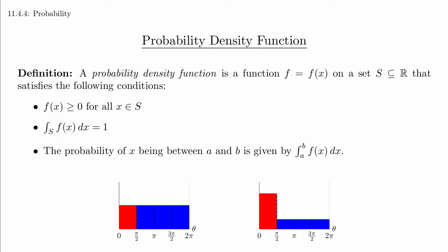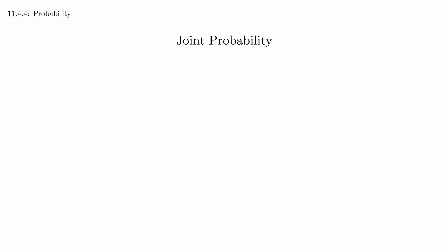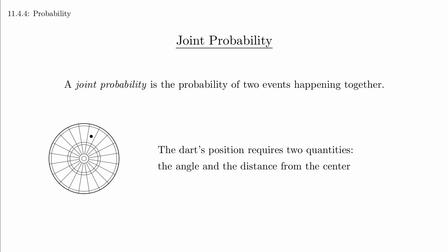Right now we're looking at just one variable, but we can expand this to two variables and get a joint probability function. With a joint probability, we are looking for two events to happen at the same time. So instead of a spinner, we might think of a dart board where the location of the dart is described by both the angle and the distance from the center. If we're working with two independent variables, then we need a double integral to calculate probabilities instead of a single integral.